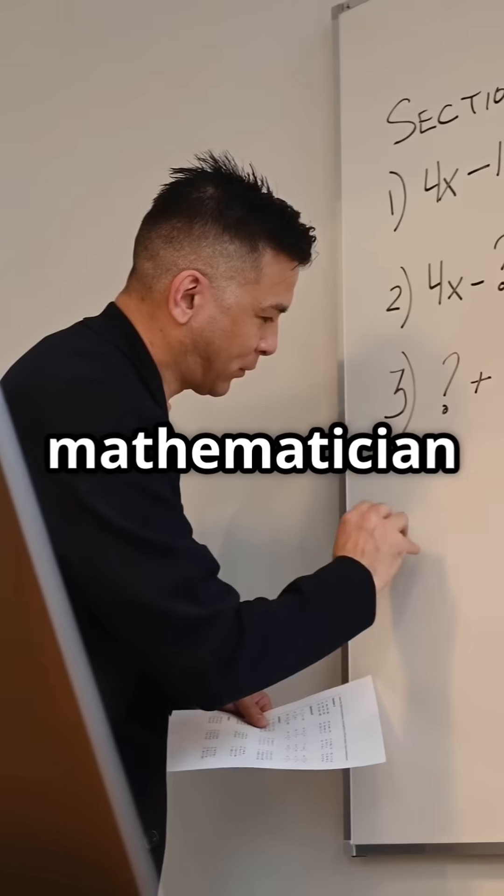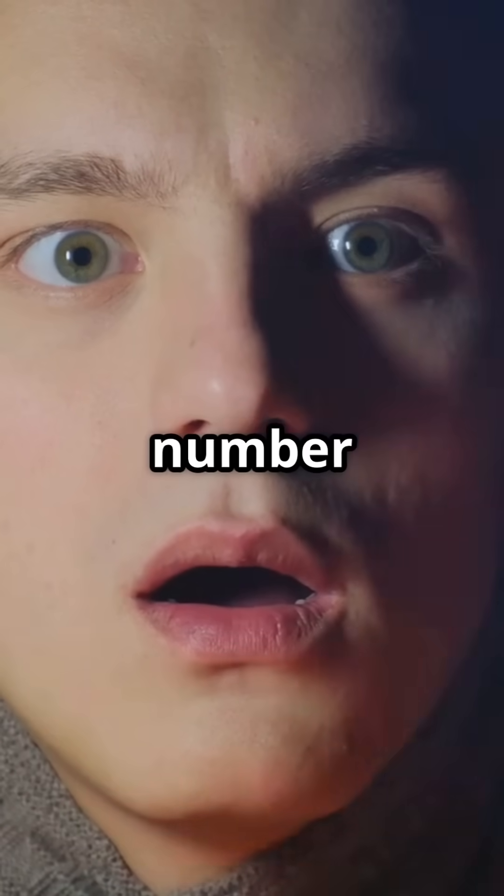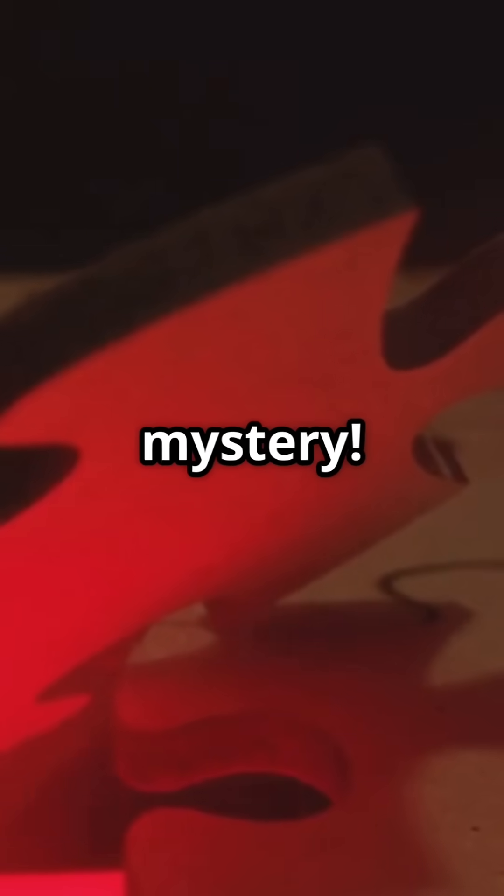A man writes down a five-digit number but when a mathematician sees it they say this number is impossible. Why? Let's solve this mystery.